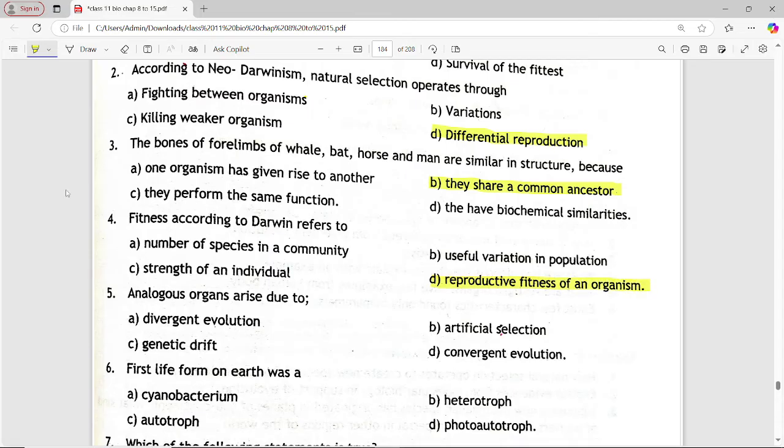Next is, analogous organs arise due to. Options are, divergent evolution, artificial selection, genetic drift, convergent evolution. Answer is option D, convergent evolution.